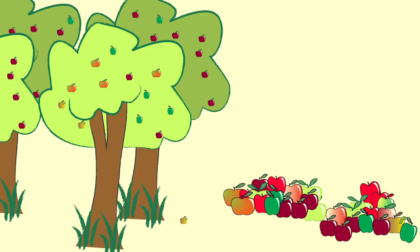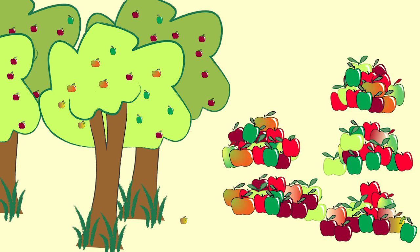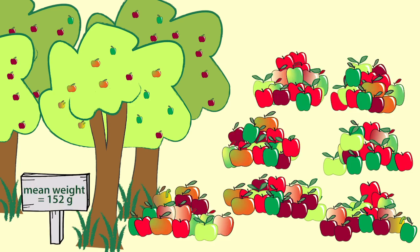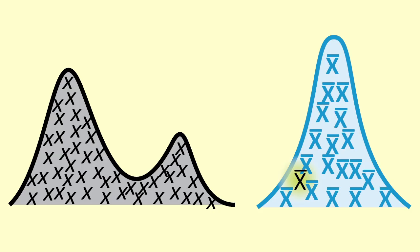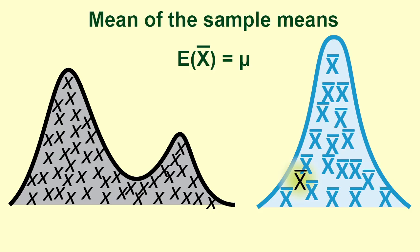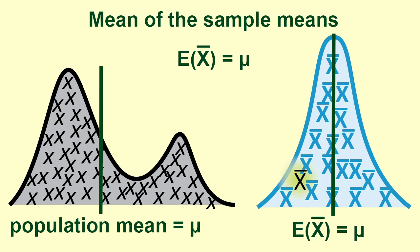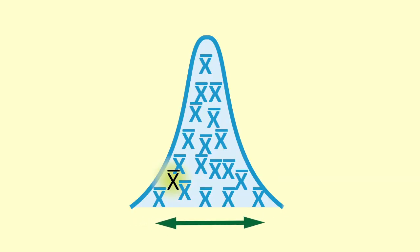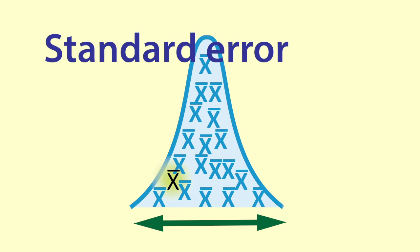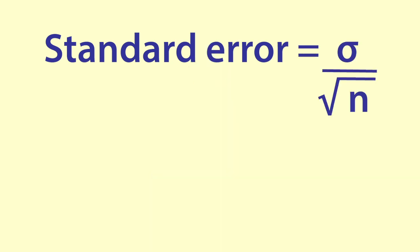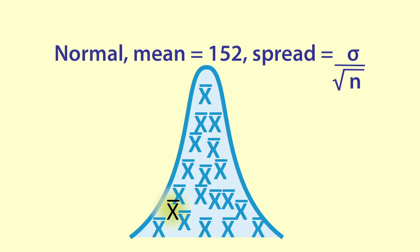If we were to take a whole lot of samples of size 15 from an orchard that really did have a mean weight of 152 grams, we would get a variety of sample means. This is known as the sampling distribution of the mean. The mean of those sample means would be the same as the mean of the population. The spread of the sample means is given as the standard error, the formula for which is sigma, the population standard deviation, over the square root of n, the sample size. The central limit theorem states that we can use a normal distribution to model the sampling distribution.